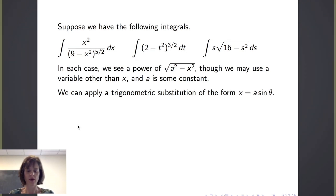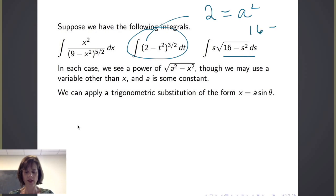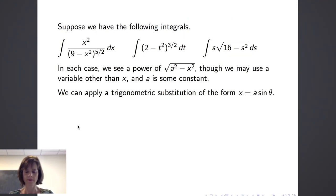For example, in the second integral, 2 is our a squared. In the third integral, 16 is our a squared. In each of these cases, we can apply a trigonometric substitution of the form x equals a sine of theta.